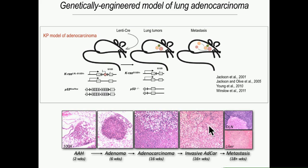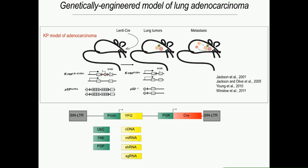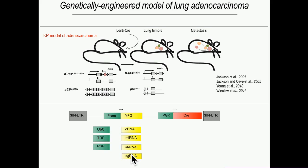The fact that we use lentiviruses to induce the tumors is relevant because we can also build other functionalities into these lentiviruses — we can bring other elements into these developing tumors. You can put your favorite gene under your favorite promoter: it could be a cDNA like Cas9, a microRNA, an shRNA, or a guide RNA. In this way, we can modify the genomes of the developing cancer cells in a very powerful fashion.